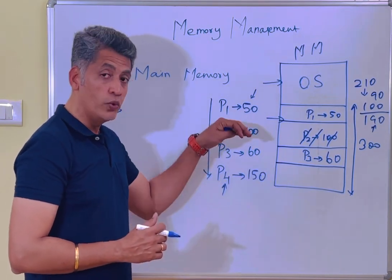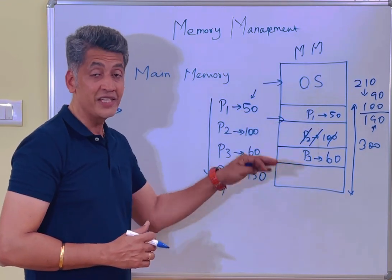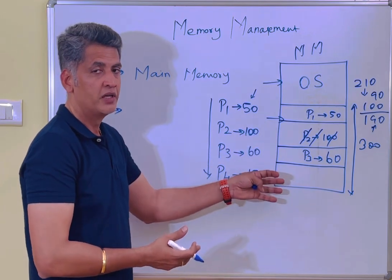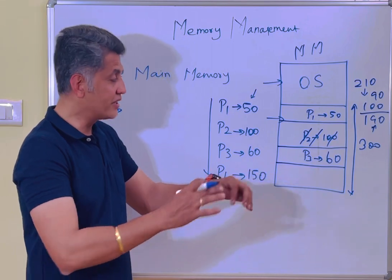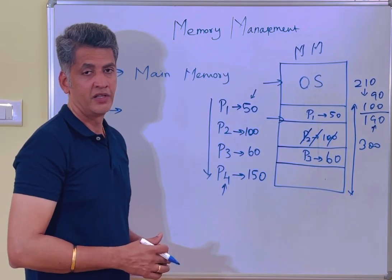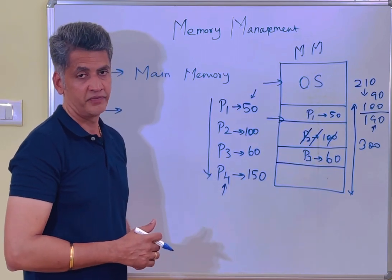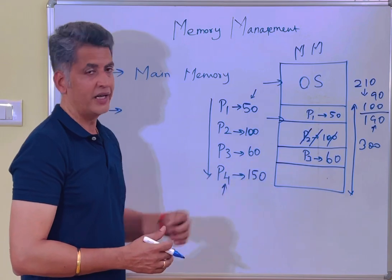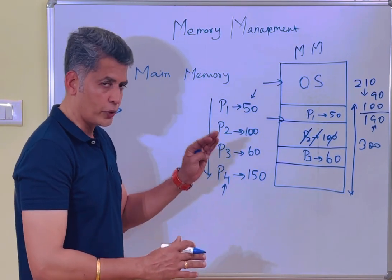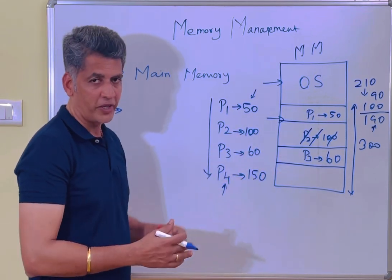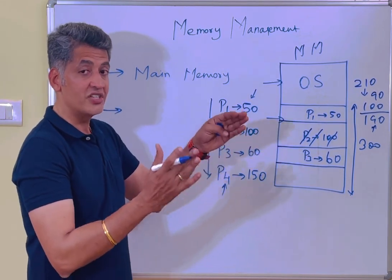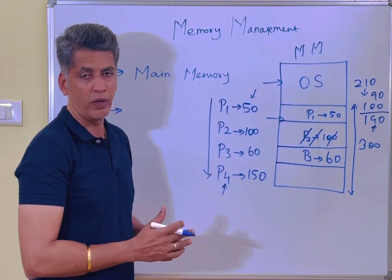Because of this, contiguous memory locations are needed. The required number of memory locations are available, but these locations are non-contiguous — they are not continuous. That's why the operating system cannot allocate this memory space to the particular process. This is the problem with contiguous memory allocation. If a process requires 150 memory locations, then surely those 150 locations need to be continuous — contiguous memory is required for process execution.